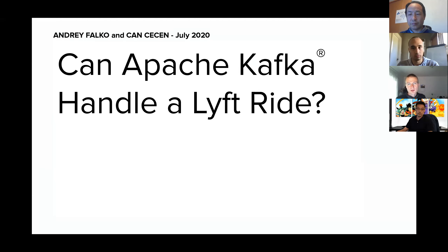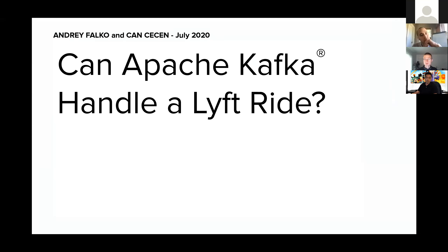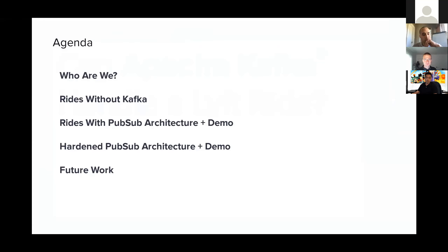After launching a successful Kafka platform at Lyft, the rides team approached us with the question: can Kafka handle a Lyft ride? On the surface it seems easy to answer, but in reality there are nuanced issues to tackle at scale. We'll cover how to architect a rideshare system without Kafka, then with a PubSub architecture, then how to harden that architecture for scale, and we'll show before-and-after demos, wrapping up with future work.